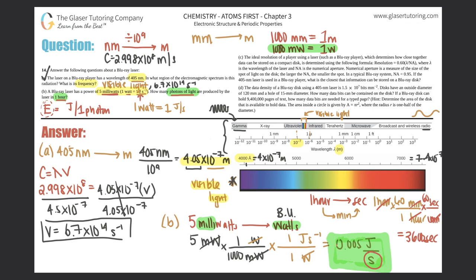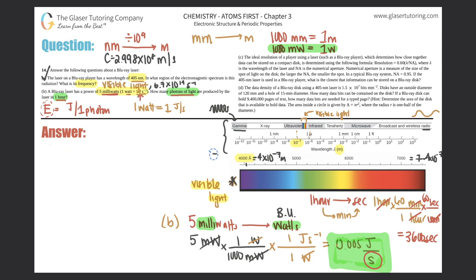Now multiplying 0.005 joules per second by 3600 seconds: the seconds cancel out, leaving just joules. 0.005 × 3600 = 18 joules total energy produced in one hour.